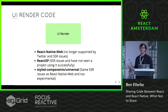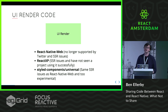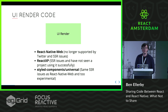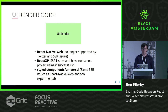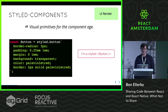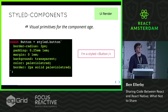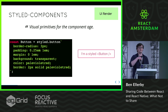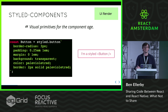Finally, one thing I want to talk about quickly is an experimental branch of styled components called styled components universal, or styled components primitives. This again has similar server-side rendering issues as React Native Web, and it's very experimental. But I want to jump into it for a moment to show the cool concept they tried to achieve. Styled components, for those of you who have not used it, is a set of visual primitives for the component age — primitives like buttons, views, and lists.